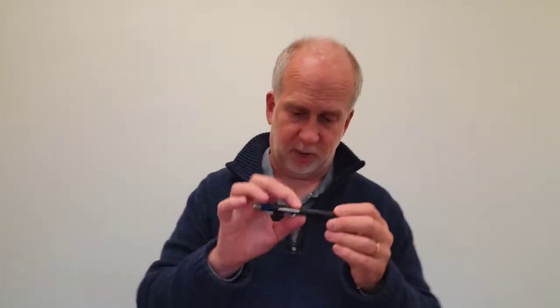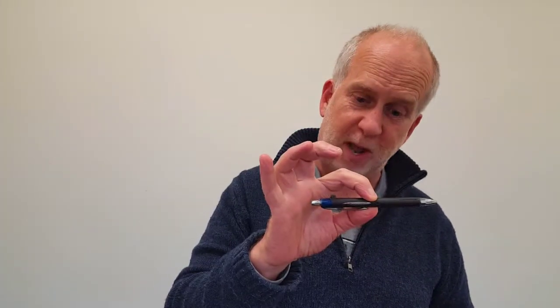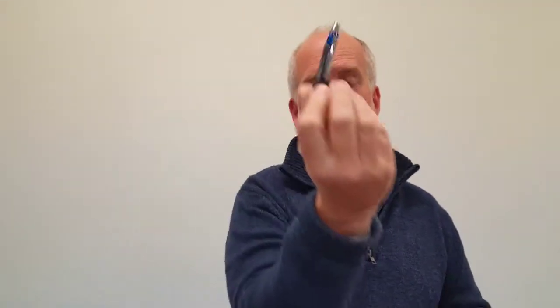A rigid body model assumes that the object keeps the same shape. What it can do is move and rotate. So for the pen, you might say its position is defined by the center of mass, and it can move around or rotate or do some combination of the two. That's what we're going to be talking about in this lesson.